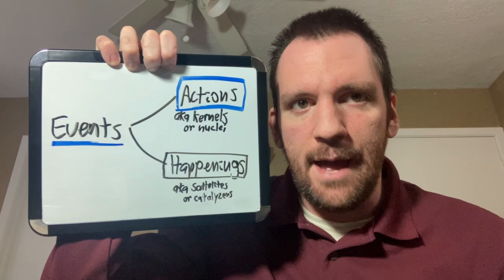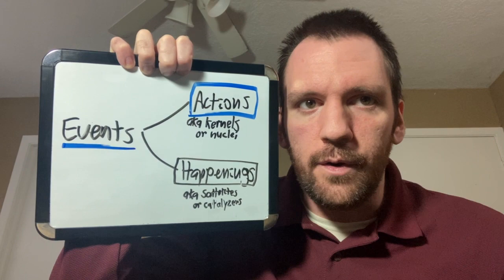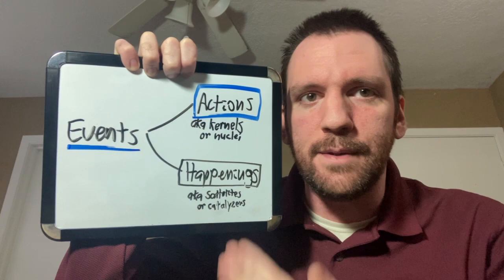The two basic event types are actions and happenings. Actions, what other narratologists call kernels or nuclei, are events that disrupt the story world in long-lasting and impactful ways. Happenings, also known as satellites and catalyzers, do not disrupt the story world, but instead dramatize the changes that happen because of the actions. For future reference, I prefer the term kernels and satellites, so I will refer to major change scenes as kernels and scenes that illustrate the changes as satellites.